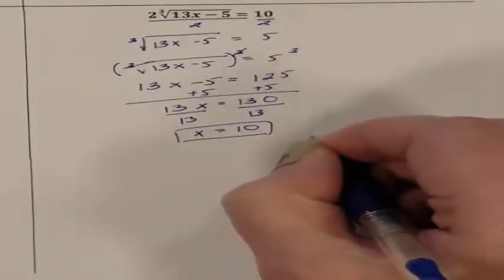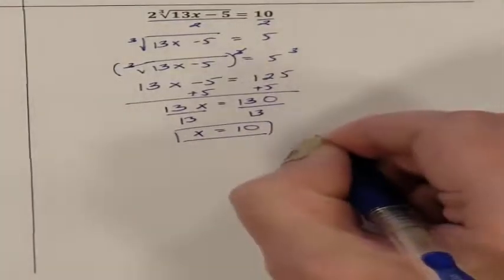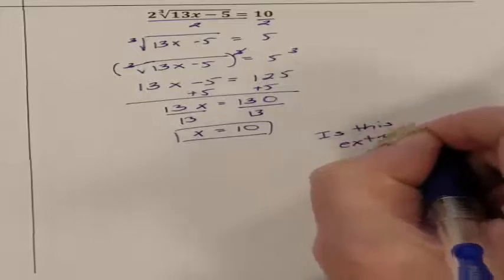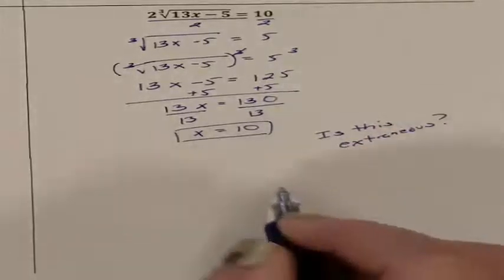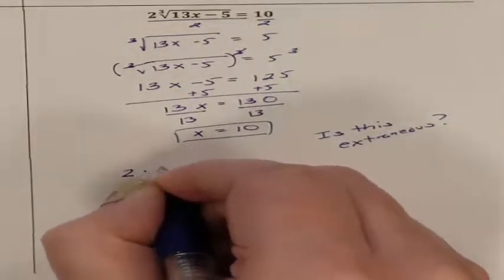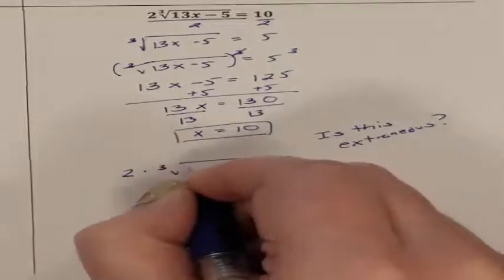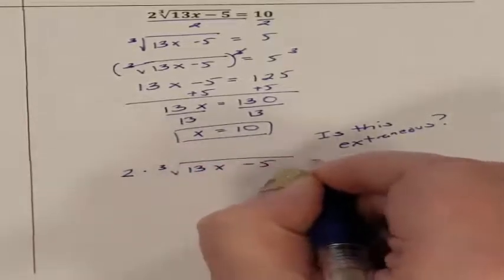Now my job is to check, is this extraneous? So do I have an extraneous answer? So we need to check. 2 times the third root of 13x minus 5 is supposed to be 10. So do I get 10?